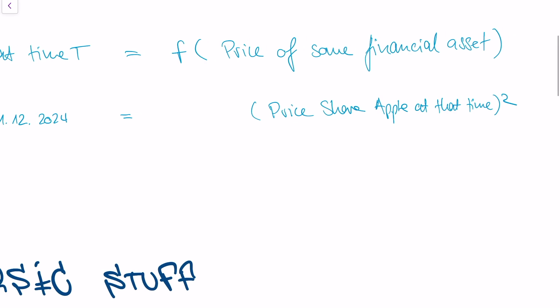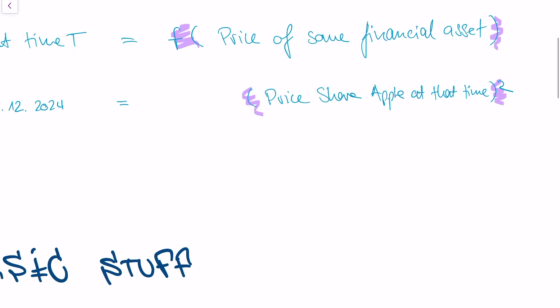So the function in this case is the square function, and the financial asset that our derivative is dependent on is the share of Apple. And the financial asset that the derivative is dependent on is called the underlying.